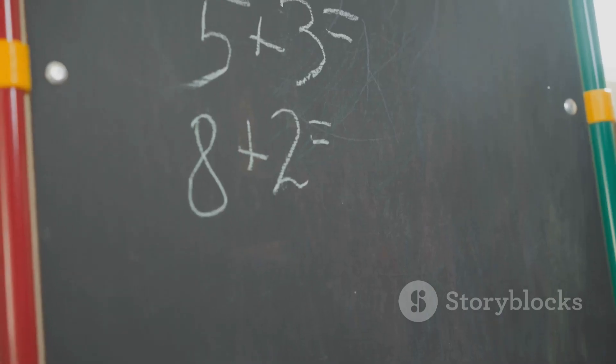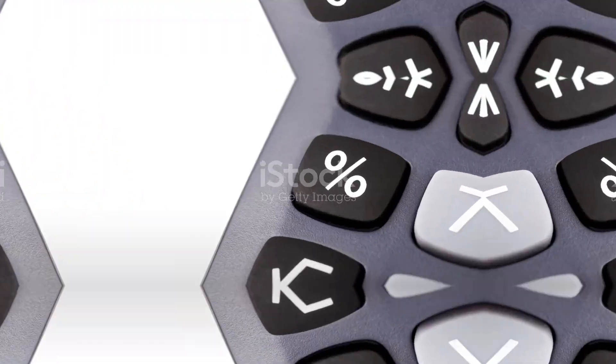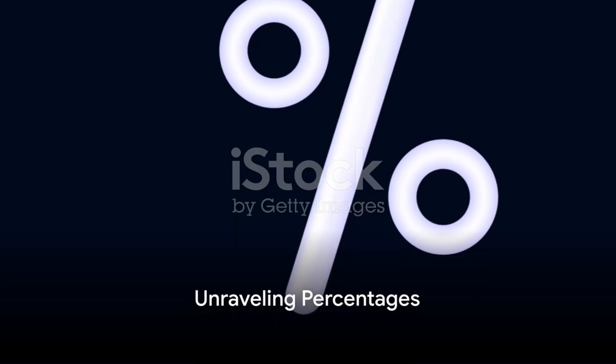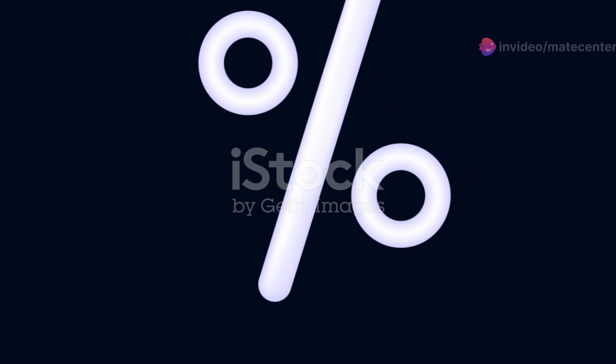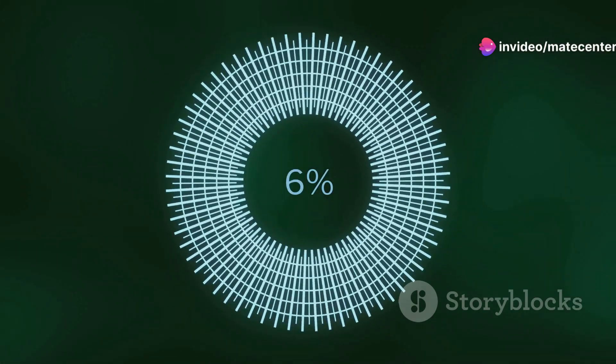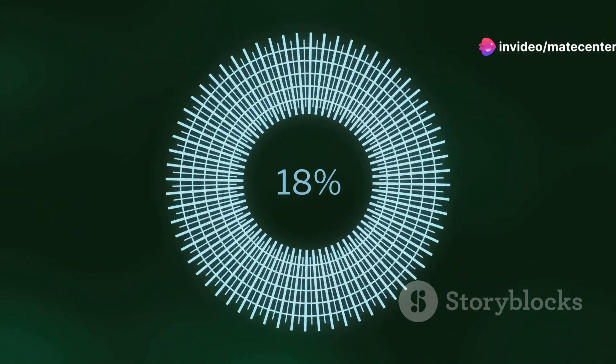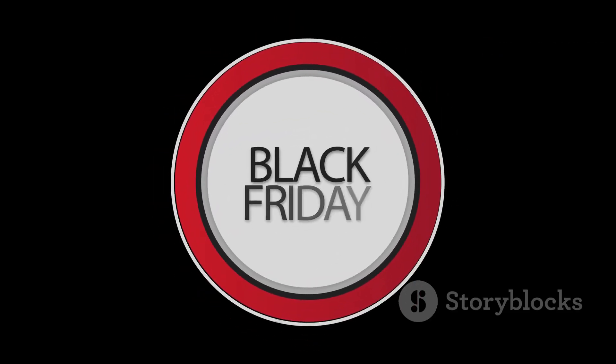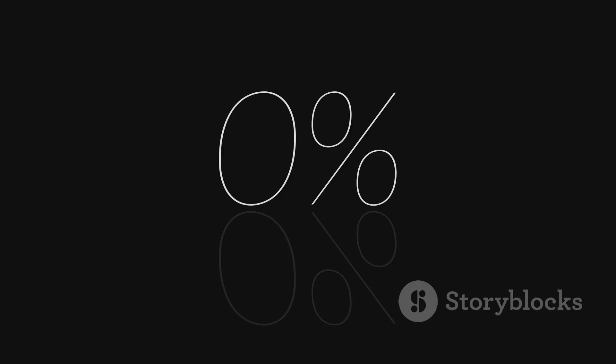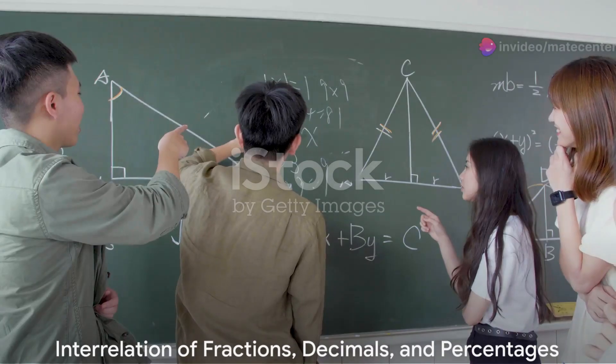Next up: percentages. The term percentage literally means per hundred. It's another way to express a fraction where the denominator is a hundred. If you've ever seen a sign that says fifty percent off, that means half off, since fifty out of a hundred is one half.